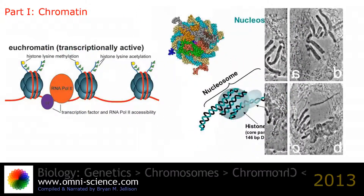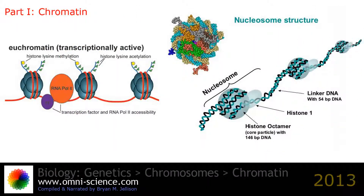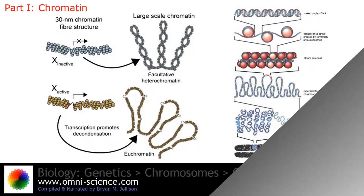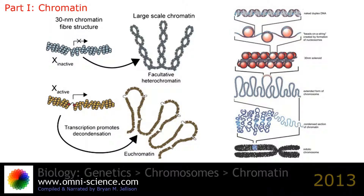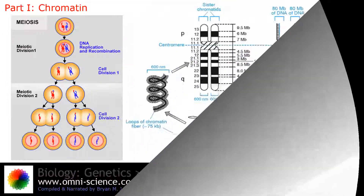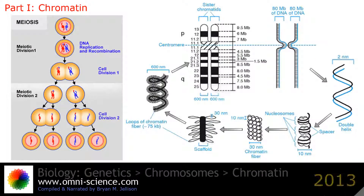1. DNA wraps around histone proteins forming nucleosomes — that beads-on-a-string structure — euchromatin. 2. Multiple histones wrap into a 30 nanometer fiber consisting of nucleosome arrays in their most compact form, heterochromatin. 3. Higher-level DNA packaging of the 30 nanometer fiber into the metaphase chromosome during mitosis and meiosis.